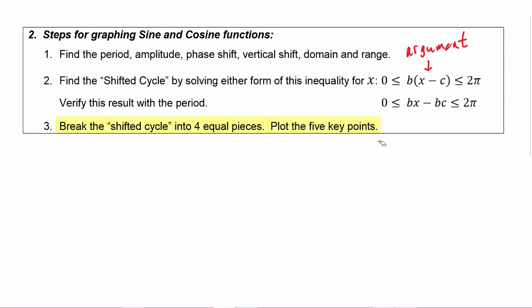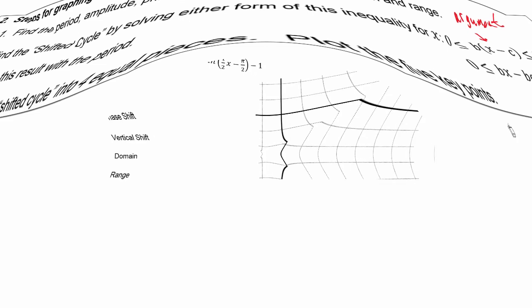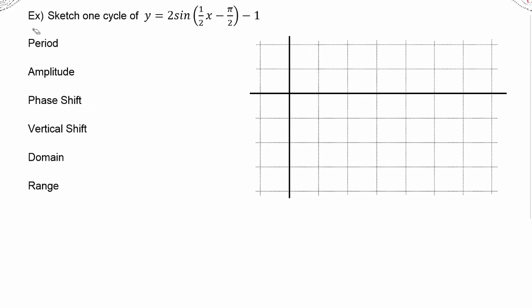So let's get started with an example. Here we have to sketch one cycle of y equals two sine of the quantity one half x minus pi over two, minus one.